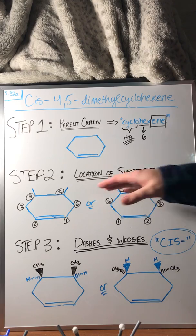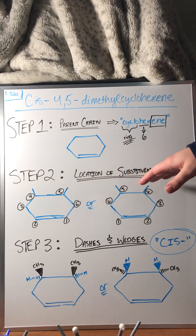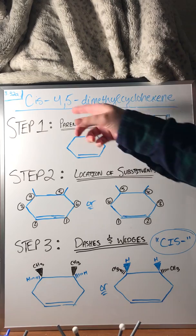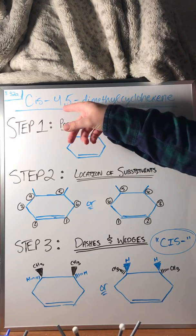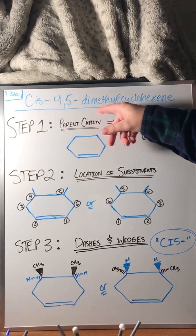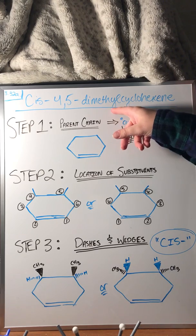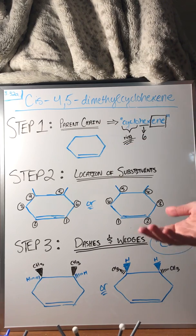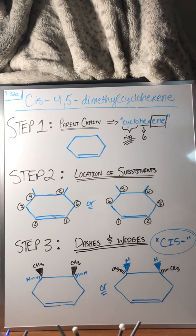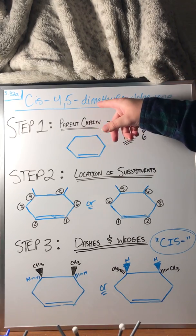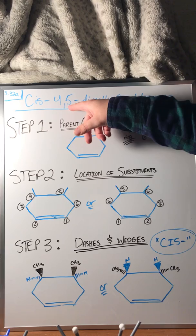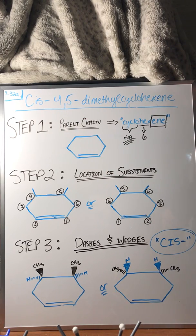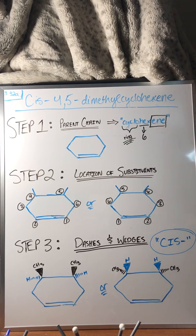We quickly move on to step two which is locating the substituents. This can be found in this whole big part right here, 4,5-dimethyl. Methyl tells us that there's going to be methyl substituents which means one carbon and three hydrogens attached to it. Di tells us there'll be two of those. Four and five tells us the location on the parent chain, which carbons they're attached to.